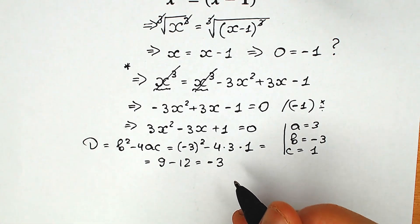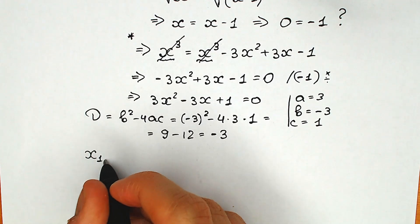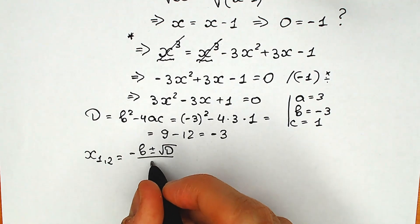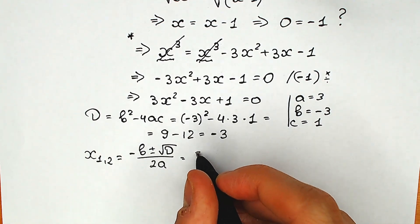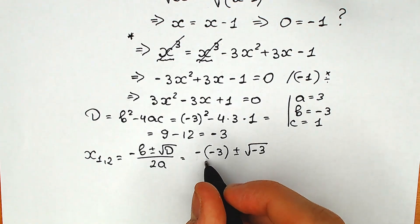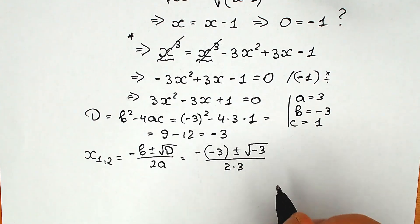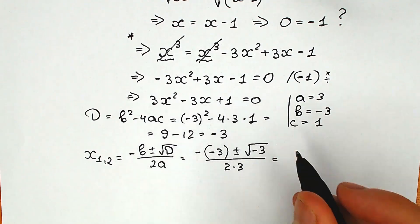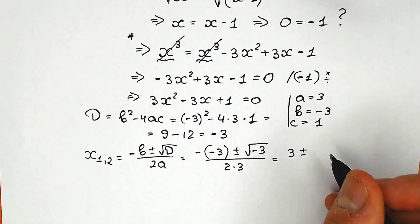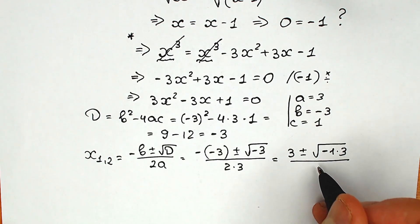No real roots, but maybe two complex roots — let's see what will happen. Let's plug in the coefficients into the quadratic formula. So x₁ and x₂ equal to minus b plus or minus square root of D, all over 2a. We have minus of minus 3, plus or minus square root of minus 3, all divided by 2 times 3. It's a really great moment to split minus 3 as minus 1 times 3. So we have square root of minus 1 times 3, all over 6.